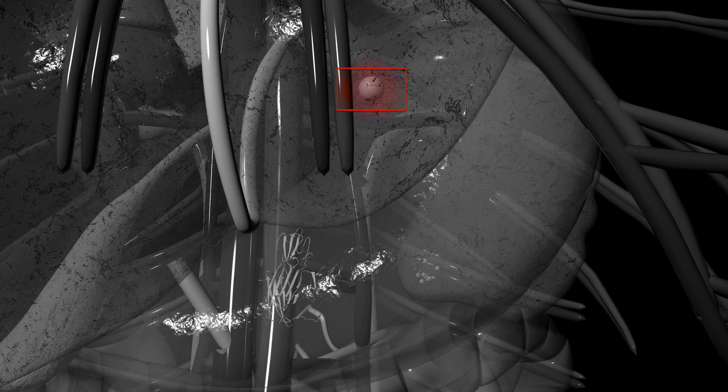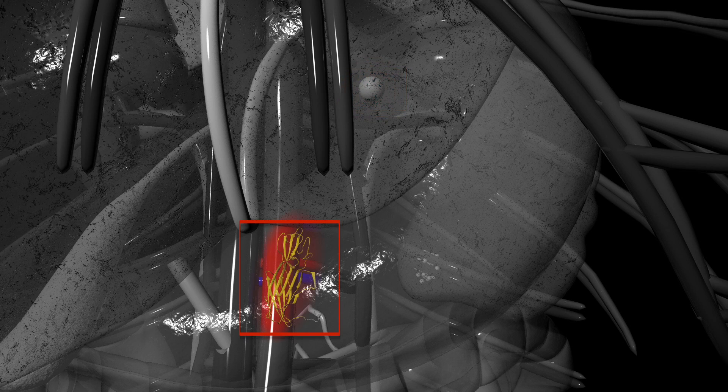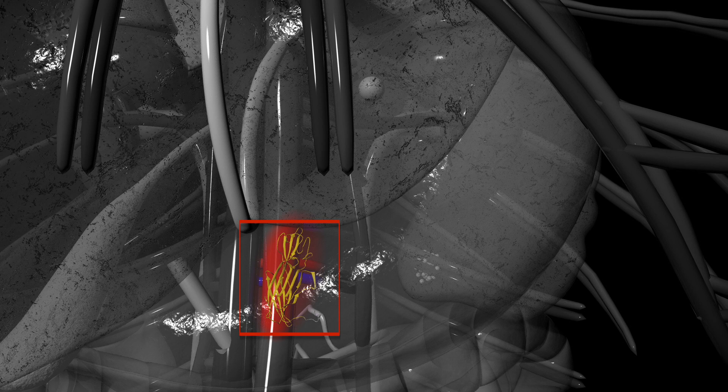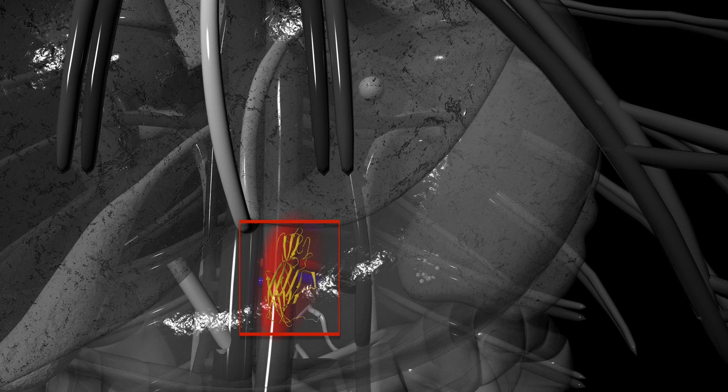This is levodopa. This is catecholamine O-methyltransferase, or COMT for short. This enzyme will break down levodopa and keep it from entering the nervous system. With less levodopa available, less dopamine will be formed.